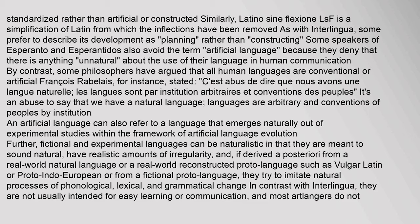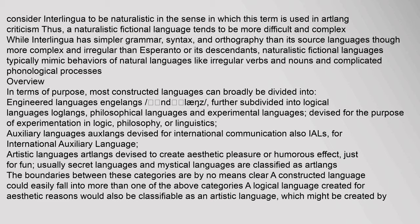Fictional and experimental languages can be naturalistic in that they are meant to sound natural, have realistic amounts of irregularity, and if derived a posteriori from a real-world natural language or reconstructed proto-language such as Vulgar Latin or Proto-Indo-European, they try to imitate natural processes of phonological, lexical, and grammatical change. A naturalistic fictional language tends to be more difficult and complex, while Interlingua has simpler grammar, syntax, and orthography than its source languages.